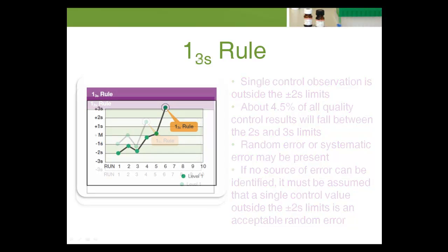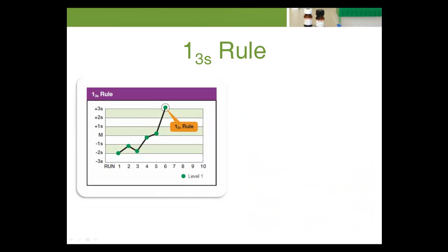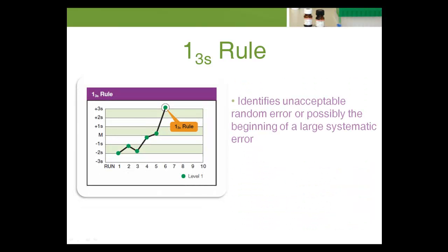The 1-3s rule identifies unacceptable random error or possibly the beginning of a large systematic error. Any QC result outside positive-negative 3s violates this rule.